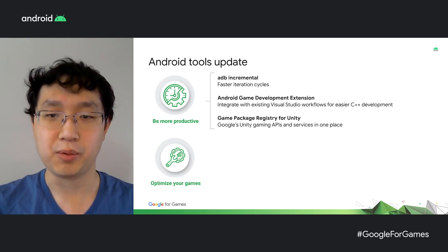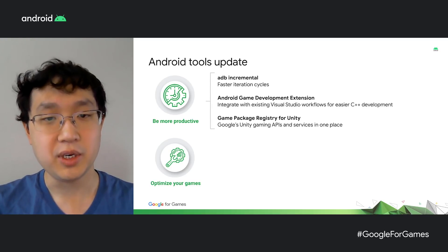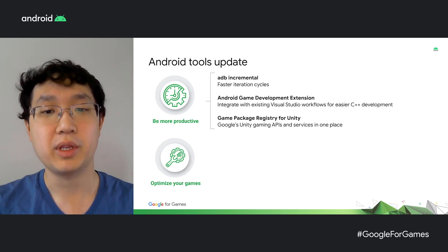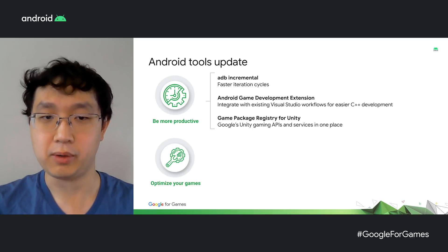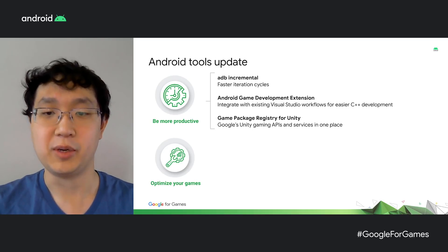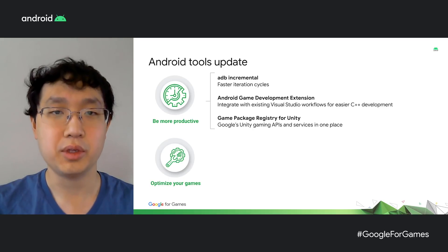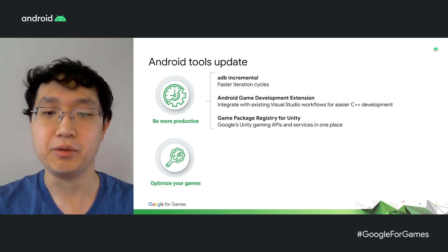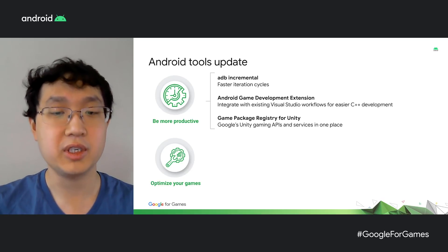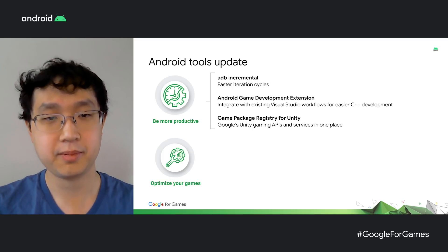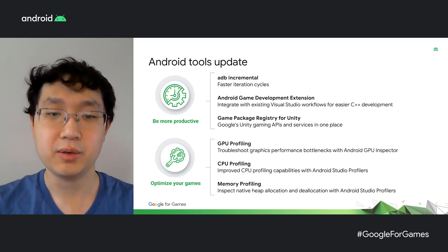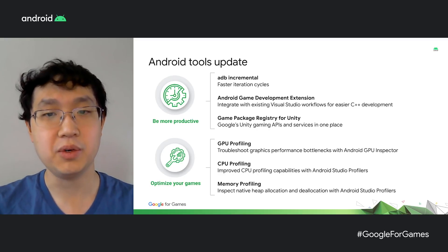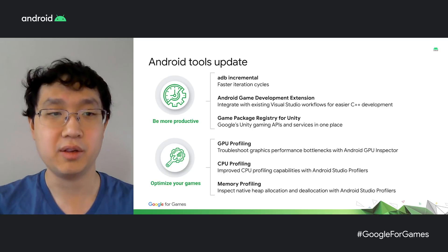We have three new tools to help your productivity that we're excited to introduce. ADB Incremental aims to significantly improve your deploy speed. For those of you with existing cross-platform development workflows in Visual Studio, the Android Game Development Extension allows you to continue using the tools and setup that you're familiar with to develop for Android. And we're introducing the Game Package Registry for Unity developers to simplify the management of our Unity services. For optimization, we have some updates to share that allow you to inspect how your game uses GPU, CPU, and memory resources in more detail than ever before.